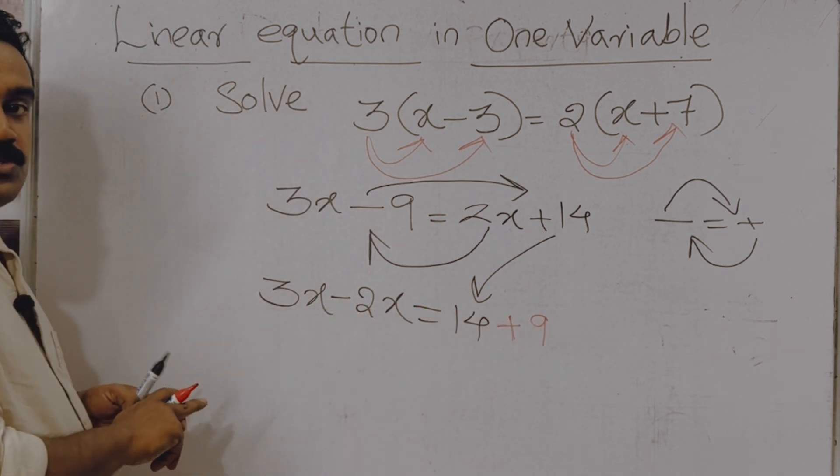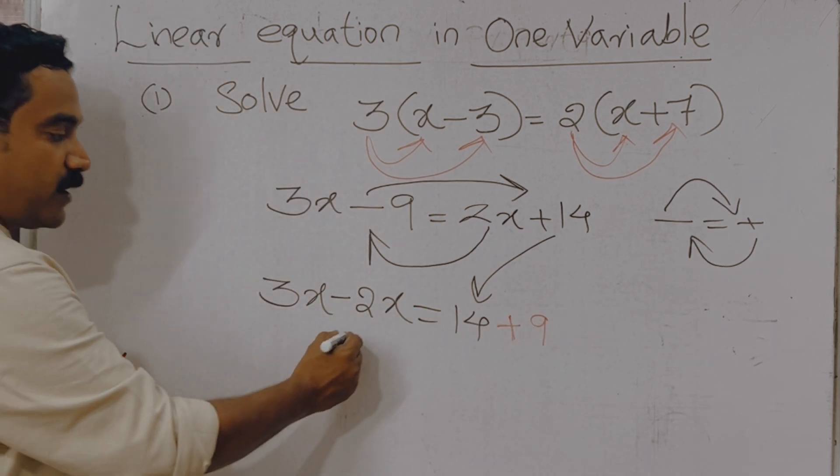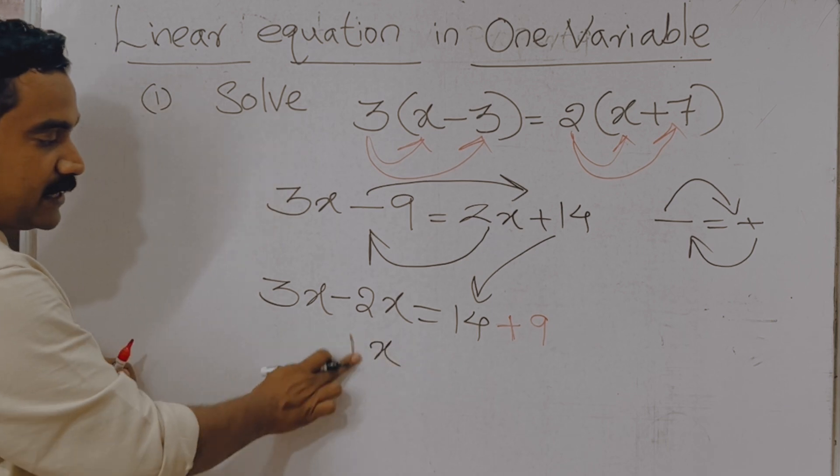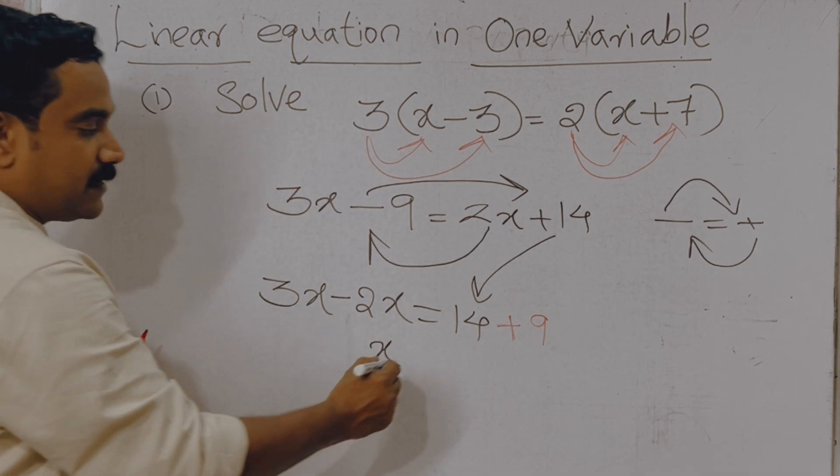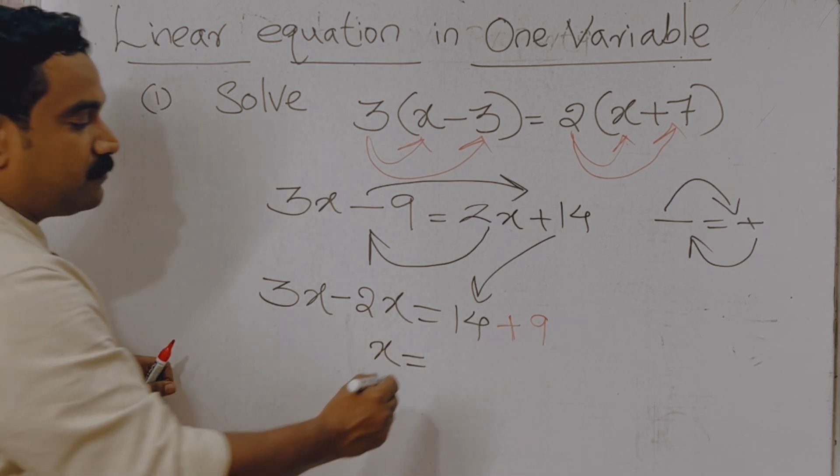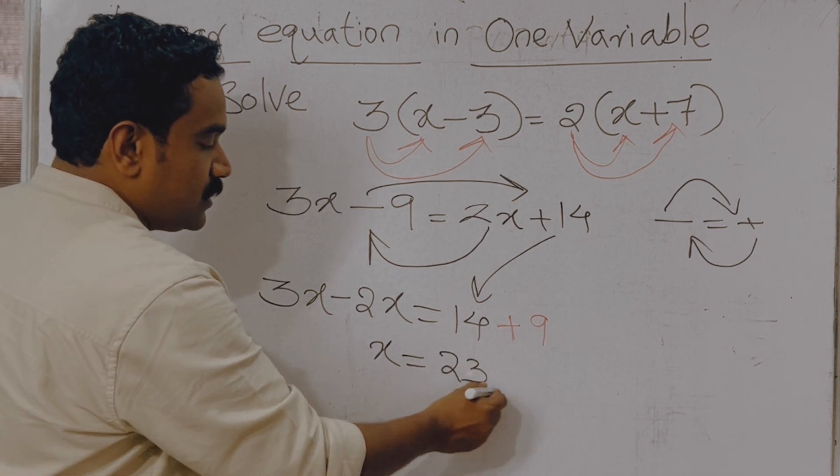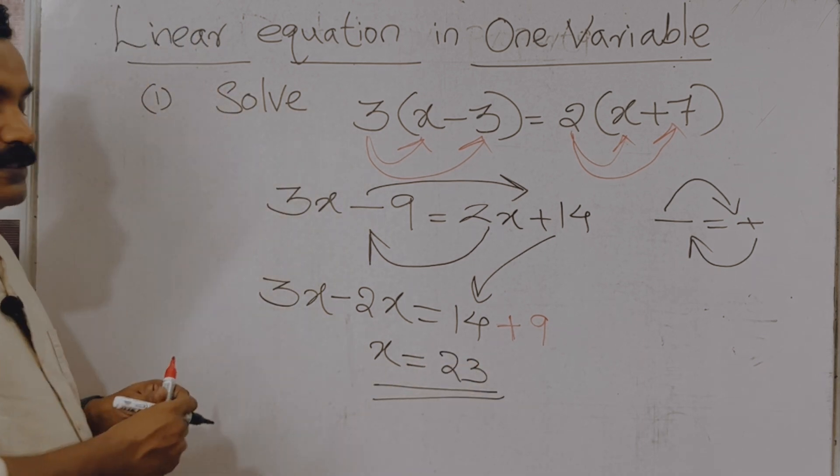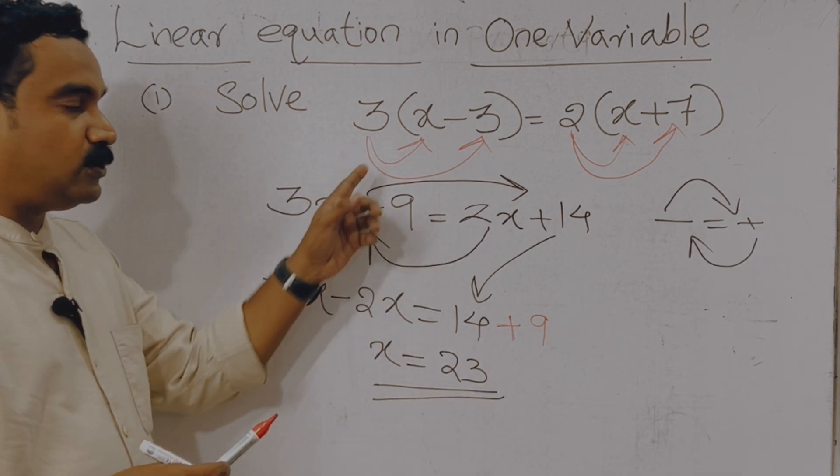What is 3x minus 2x? 3x minus 2x equal to 1x or simply you can write x. x is equal to 14 plus 9, 14 plus 9 is equal to 23. So this is the value of x. So we solved this equation.